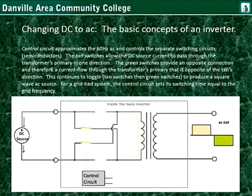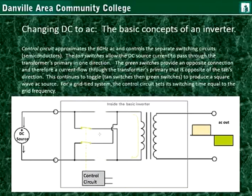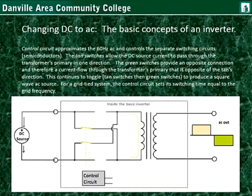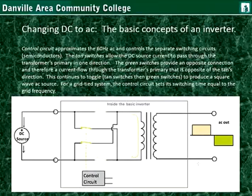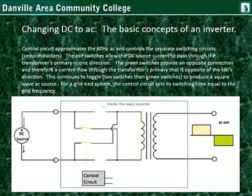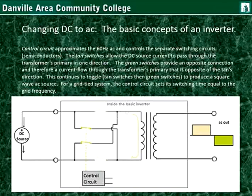The tan switches allow the DC source current to pass through the transformer's primary in one direction. When the tan switches are closed and the greens are open, there is a solid electrical path — the DC source flows through the transformer primary in this direction and back to positive. Quickly after that, the switches change positions — the tans open up and the greens close. Now electrical current is provided to the transformer in the opposite direction. So the source is still a DC source, but it's being fed by semiconductor switches into the transformer in alternating directions.